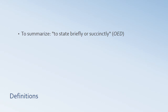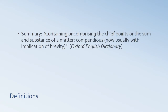Let's look at definitions briefly. The OED — the Oxford English Dictionary — defines summarize as to state briefly or succinctly. So when I'm asking you to summarize the plot of something, I want you to state it briefly or succinctly. Also, according to the OED, the word summary itself is something that is containing or comprising the chief points or the sum and substance of a matter — compendious, usually with the implication of brevity. So: the chief points, the main ideas, and brief.